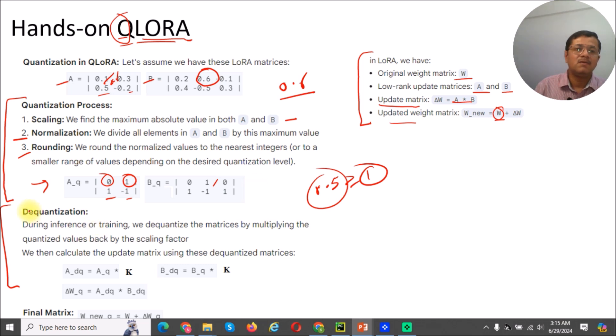So if we use the matrix in integer format, then it will reduce the computation overhead to a very high level. Now you will think that if we do such kind of quantization, then how can we dequantize and get the original value?